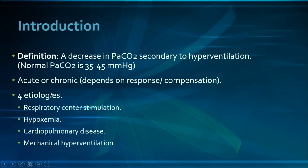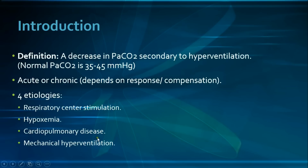There are four main mechanisms by which respiratory alkalosis occurs. The first one is direct respiratory center stimulation in the brainstem. The second one is hypoxemia, which activates the chemoreceptors and therefore causes hyperventilation. The third one is cardiopulmonary disease regardless of hypoxemia, due to pressure and stretch receptors present in the airway, lungs, and heart causing reflex hyperventilation. The last one is mechanical hyperventilation.